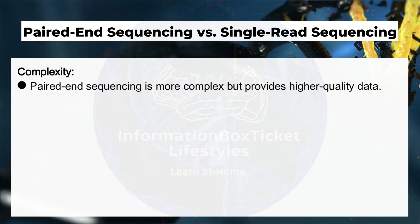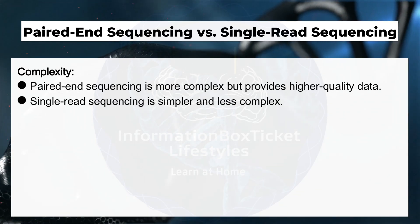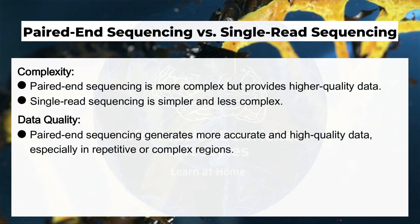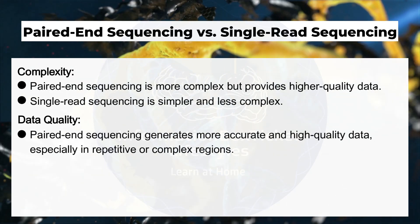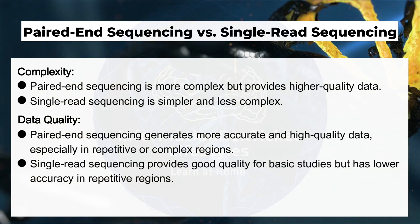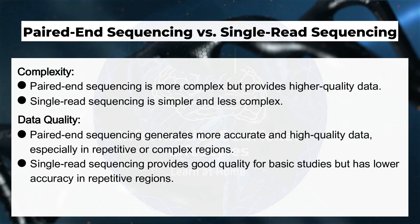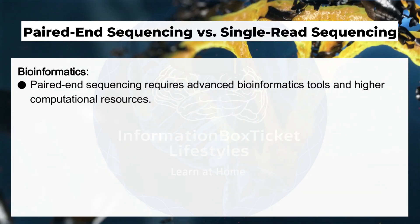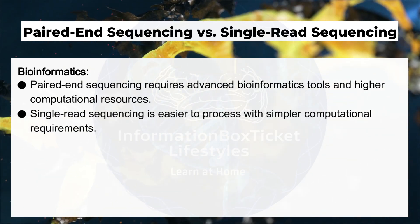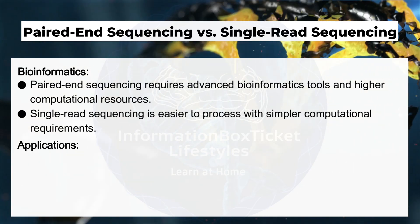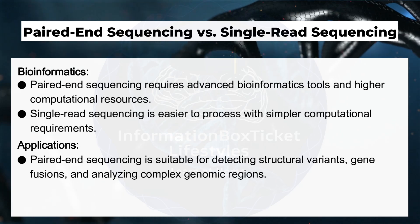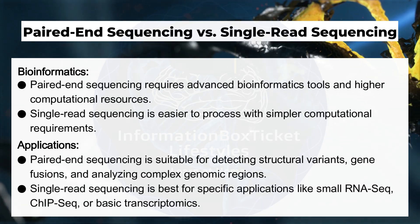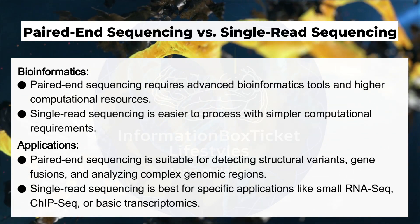Complexity: paired end sequencing is more complex but provides higher quality data, while single-read sequencing is simpler and less complex. Data quality: paired end sequencing generates more accurate and high-quality data, especially in repetitive or complex regions, while single-read sequencing provides good quality for basic studies but has lower accuracy in repetitive regions. Bioinformatics: paired end sequencing requires advanced bioinformatics tools and higher computational resources, while single-read sequencing is easier to process with simpler computational requirements. Applications: paired end sequencing is suitable for detecting structural variants, gene fusions, and analyzing complex genomic regions, while single-read sequencing is best for specific applications like small RNA-seq, ChIP-seq, or basic transcriptomics.